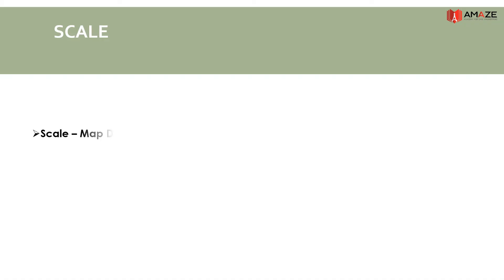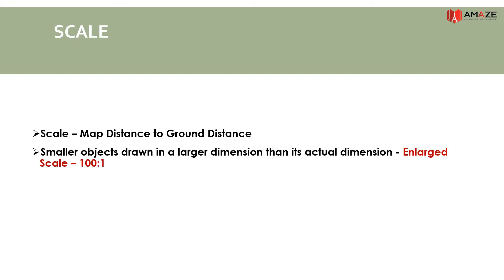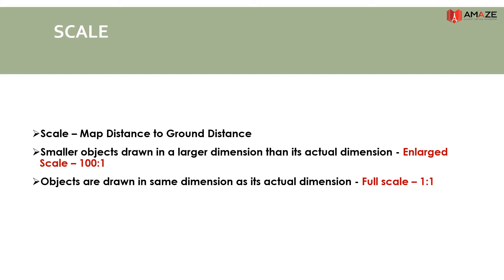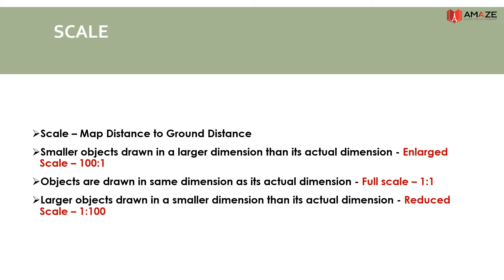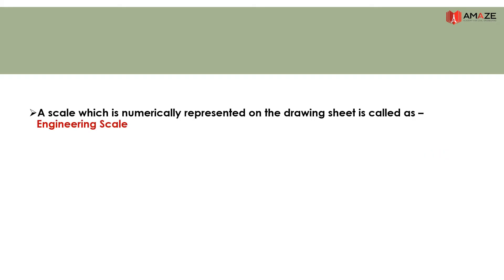Scale is the map distance to ground distance. Actual dimension is the larger dimension. A scale which is numerically represented on the drawing sheet is called an Engineering Scale — for example, 1 centimetre equals 100 metres. Scale used in survey maps is called a graphical scale.